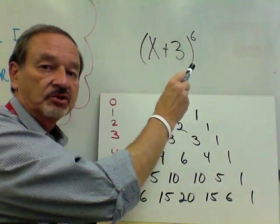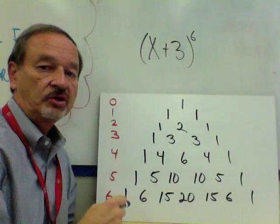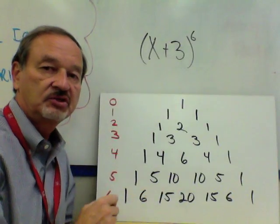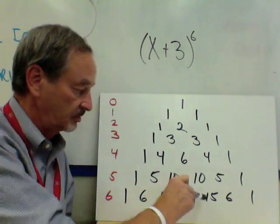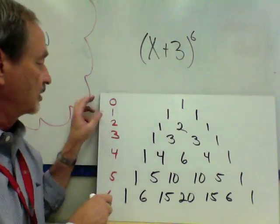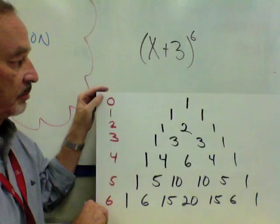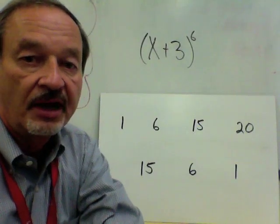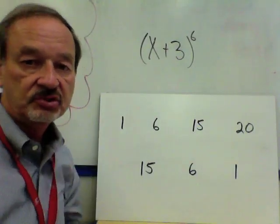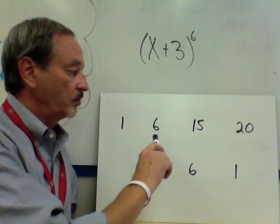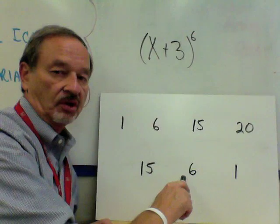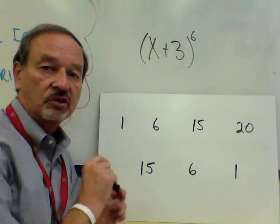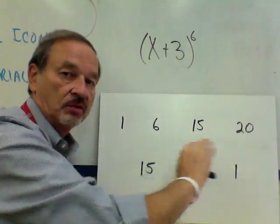For this problem, because it's a power of six, we're going to use the sixth row. So we take the digits in the sixth row — 1, 6, 15, 20, 15, 6, and 1 — and write them on a piece of paper. I want you to write these on a separate piece of paper, not on the one with your Pascal's Triangle. I've written them stacked here because of the camera angle, but if you can write them all in a row, that's better.